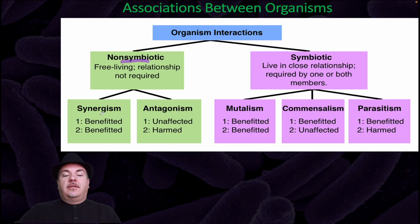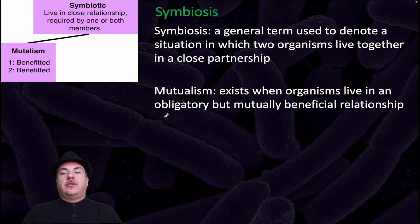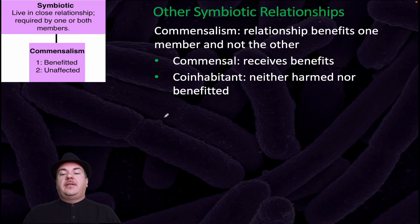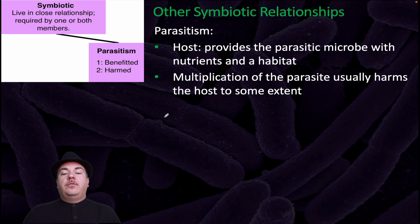Among the non-symbiotic associations, you can have synergism, in which both are benefited, and antagonism, in which one is unaffected and the other is harmed. Symbiosis is a general term for two organisms living together in a close partnership. Mutualism involves an obligatory but mutually beneficial relationship. Commensalism benefits one member while the co-inhabitant is neither harmed nor benefited. Parasitism involves a host providing the parasitic microbe with nutrients and a habitat, and multiplication of the parasite usually harms the host — the parasite benefits and the host is harmed.